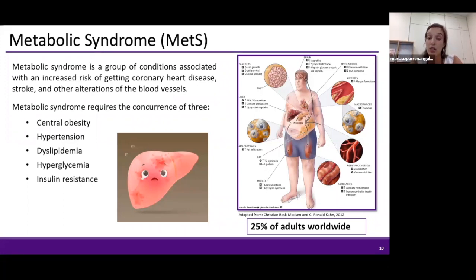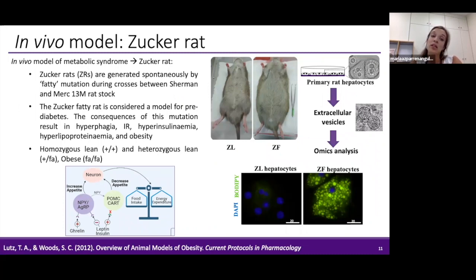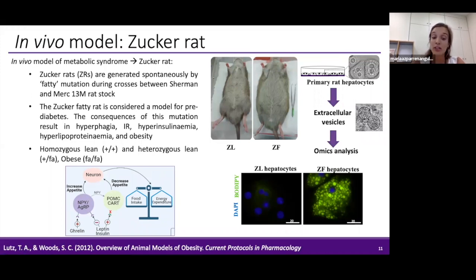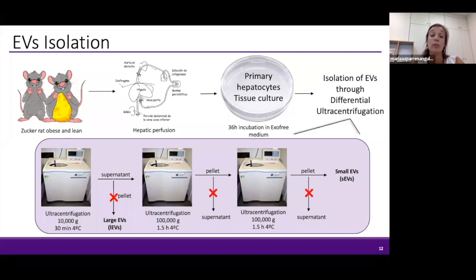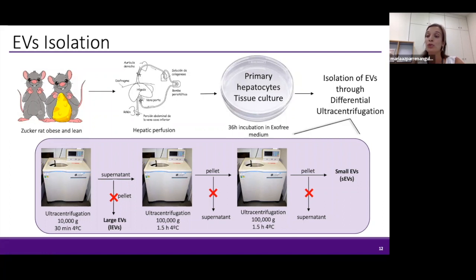This disease affects 25% of adults worldwide. In recent years, extracellular vesicles have been implicated in the progression of metabolic syndrome. To study this disease, we work with an in vivo model of the Zucker rat, which is generated spontaneously by a fatty mutation — the leptin receptor is mutated so they never feel satiated. We can have three phenotypes: lean and obese. For vesicle isolation, we perform hepatic perfusion of the Zucker rat, seed primary hepatocytes in culture with exosome-free media for 36 hours, and isolate small extracellular vesicles through differential ultracentrifugation.